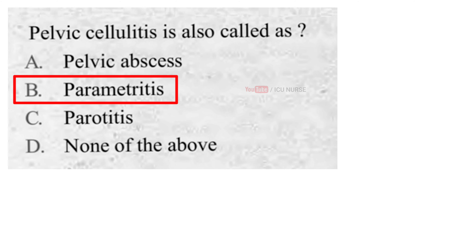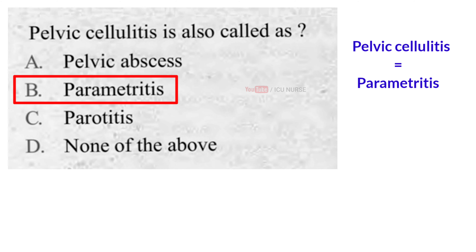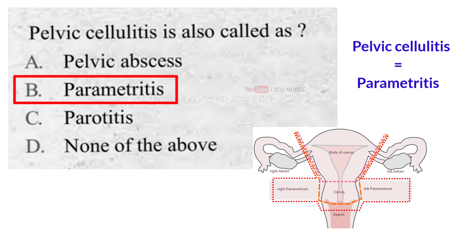Parametritis. Pelvic cellulitis is also known as parametritis. It is an infection of the parametrium, that is the connective tissue adjacent to the uterus. It is considered a form of pelvic inflammatory disease.